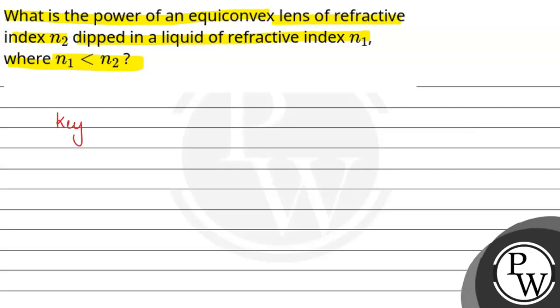Here we have the key concept: the power of an equiconvex lens. In the question, we are given an equiconvex lens. Equiconvex lens means that the radius of curvature of both curved surfaces is equal, which means R1 equals R2 equals R.